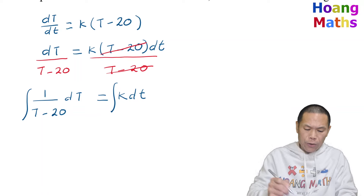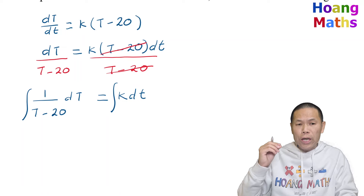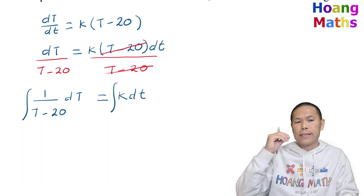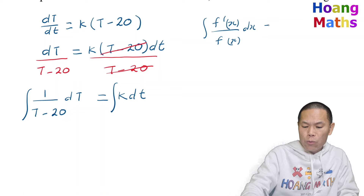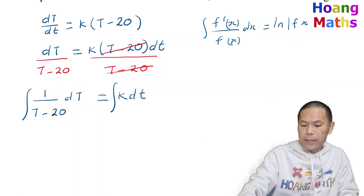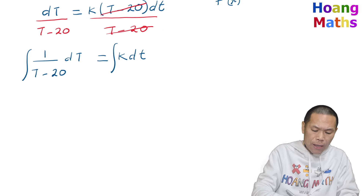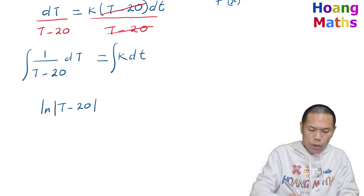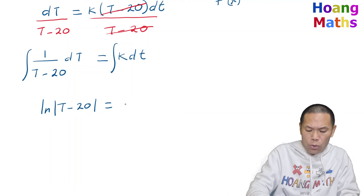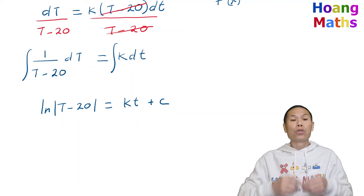Integrating one over (T minus 20) — if we differentiate the denominator we get 1, the same as the numerator — so using the rule that the integral of f'(x)/f(x) dx equals ln|f(x)|, the left-hand side gives ln|T minus 20|. The right-hand side gives kt. Don't forget to add the constant c.